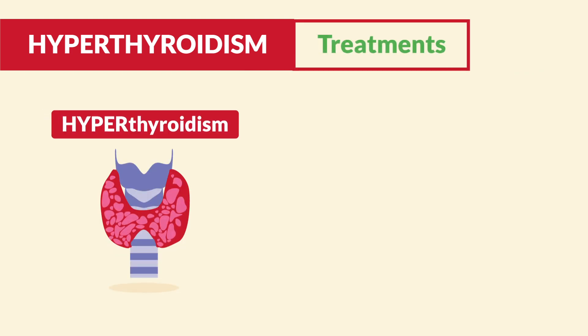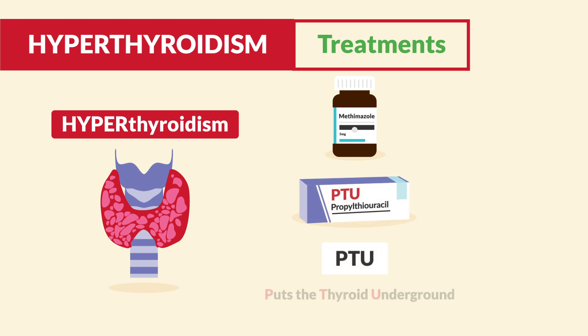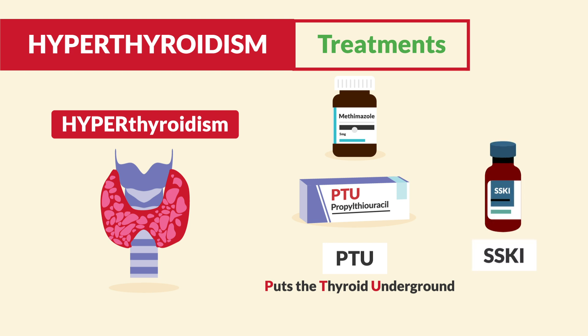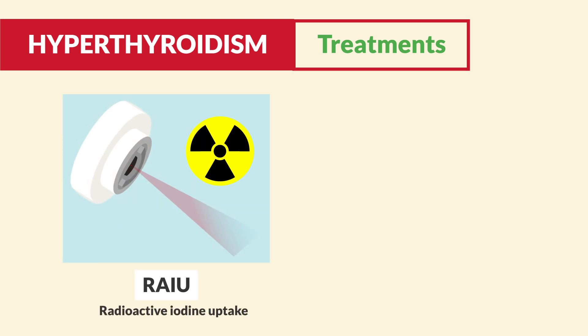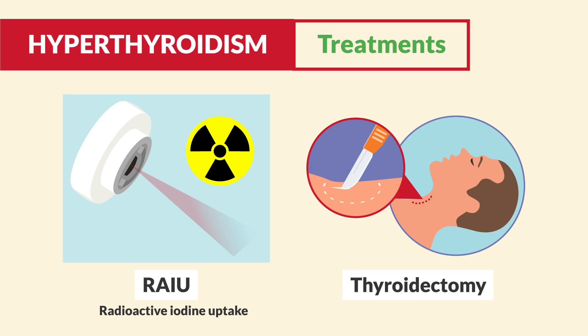When the thyroid is super high and amped up, we simply treat it by slowing it down or killing it with antithyroid medications. The key medications that kill the thyroid: first up is methimazole. Next is PTU, which puts the thyroid underground — it simply slows down the thyroid. And next is SSKI. In severe cases, we might need a big gun medication like RAIU, radioactive iodine uptake, that destroys the thyroid in one dose and is very toxic. Or we can use surgery like a thyroidectomy.